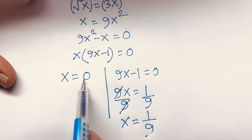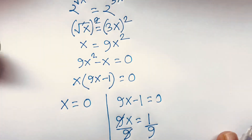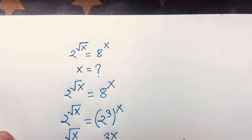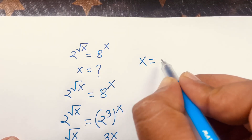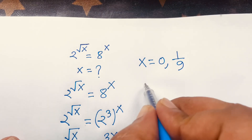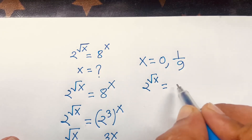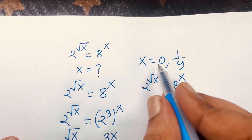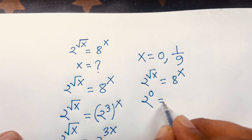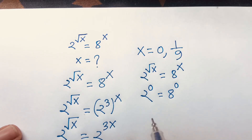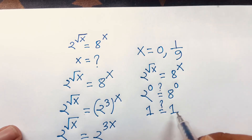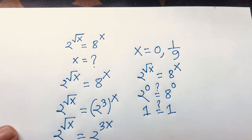Let's verify our answers: x equals 0 and x equals 1 over 9. Our question is 2 to the power square root x is equal to 8 to the power x. For x equals 0: left hand side is 2 to the power square root 0, which is 2 to the power 0, equal to 1. Right hand side is 8 to the power 0, equal to 1. So 1 equals 1 — x equals 0 is correct.